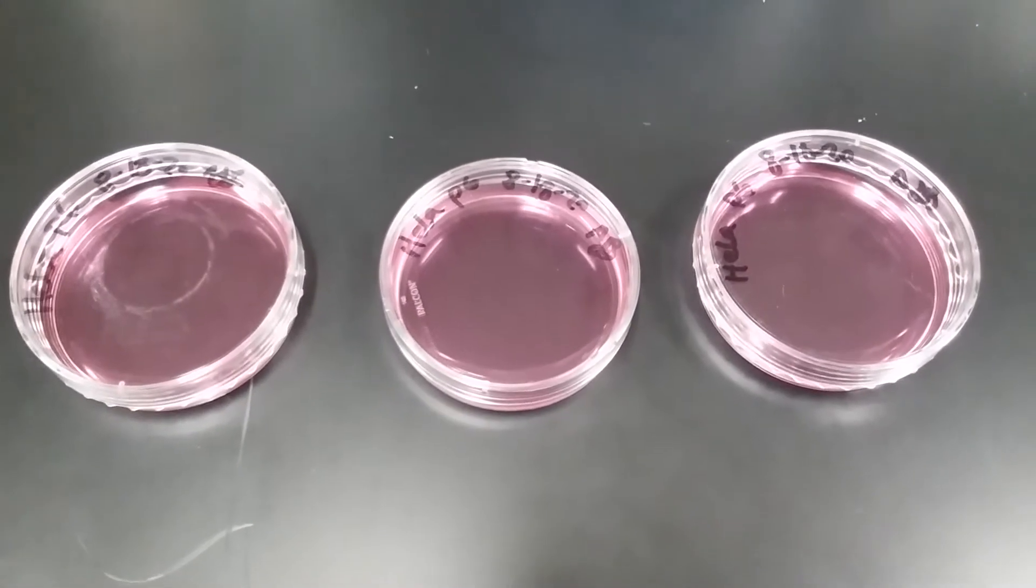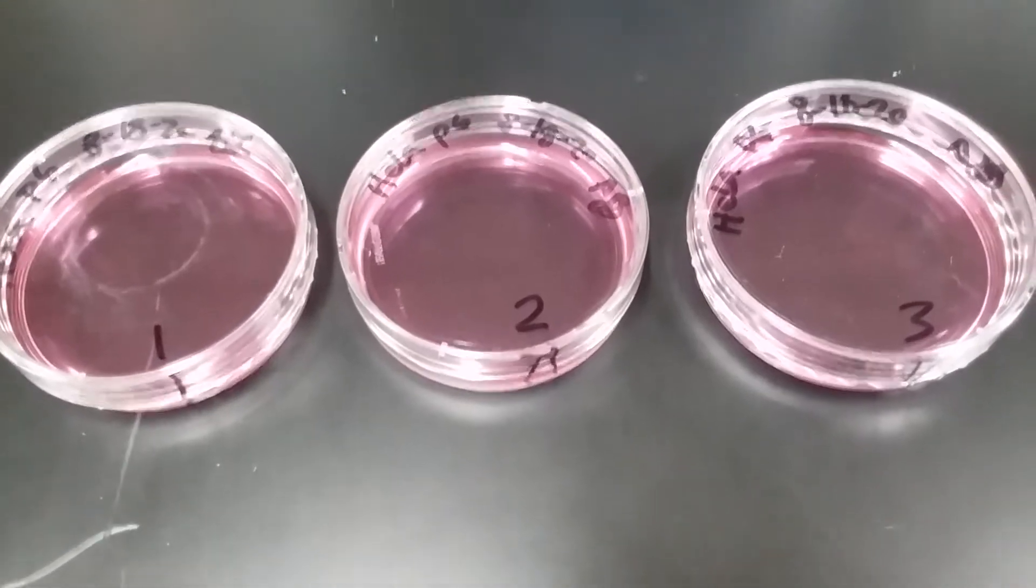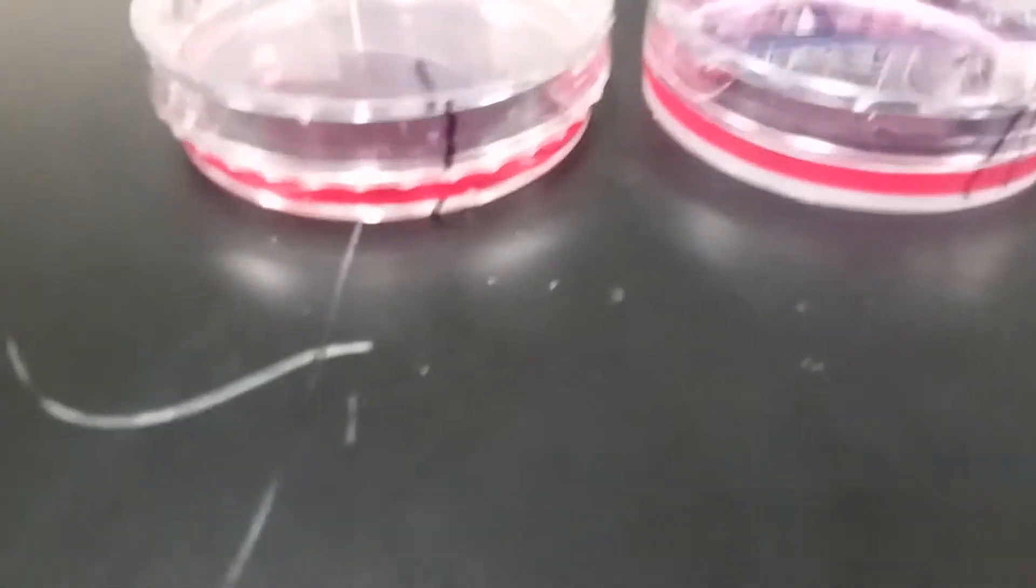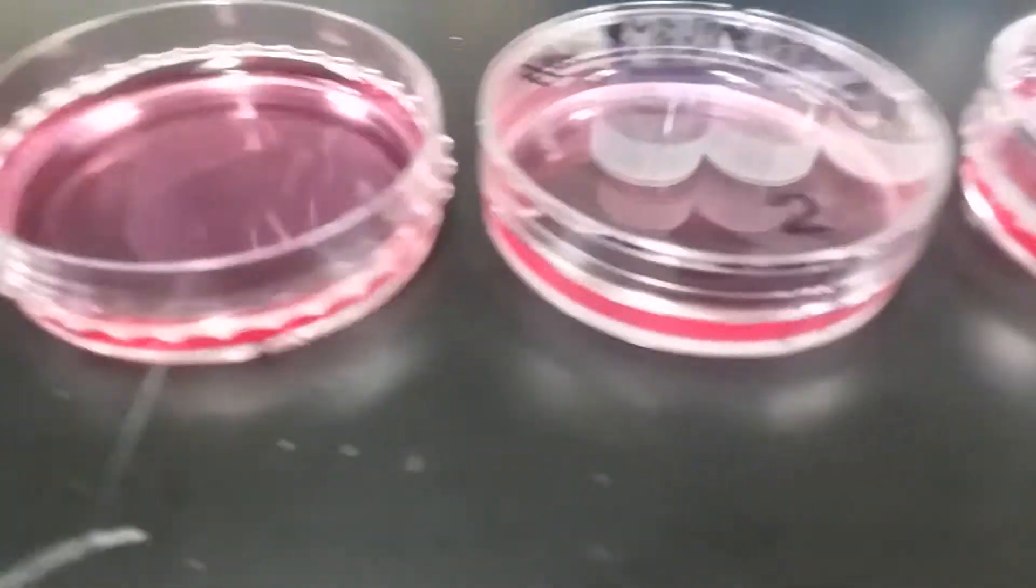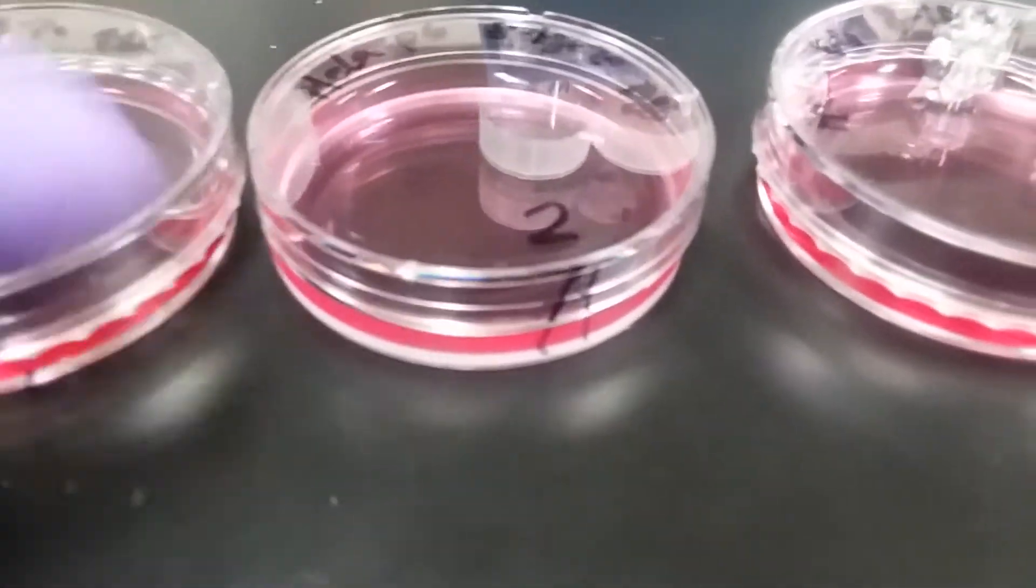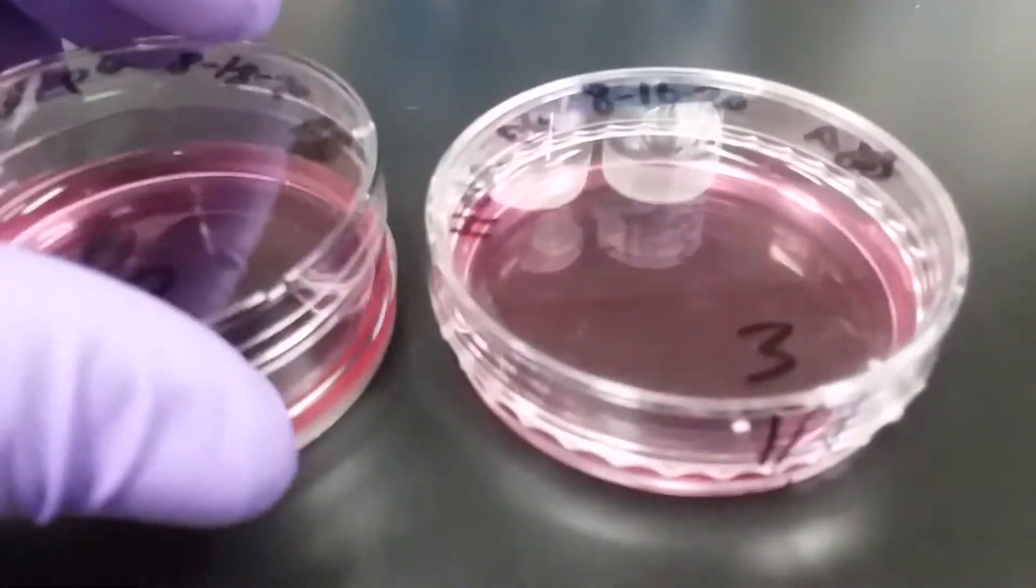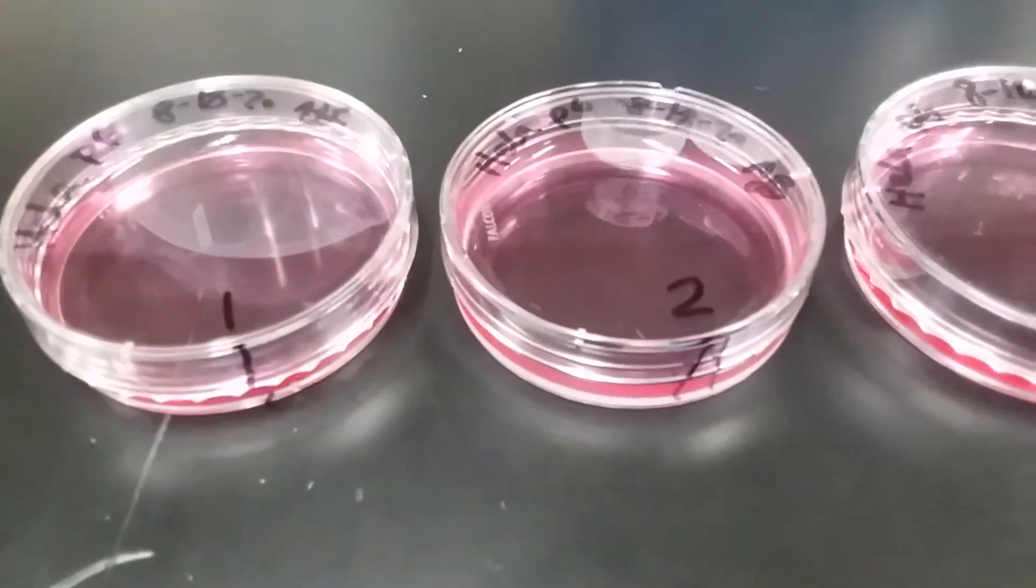So our next step is to label the dishes, one, two, and three. I've labeled them one, two, and three, but just a handy trick is sometimes these lids get separated from their dishes. So you want to lead a line through to the bottom of the plate, so that if the lid ever gets separated from the dish, you don't blow your experiment.